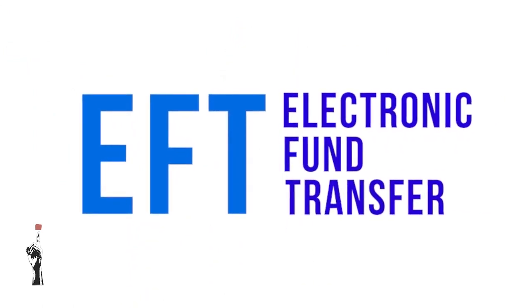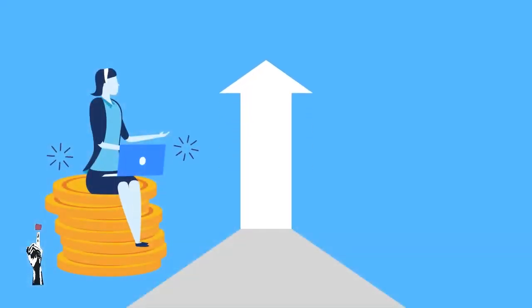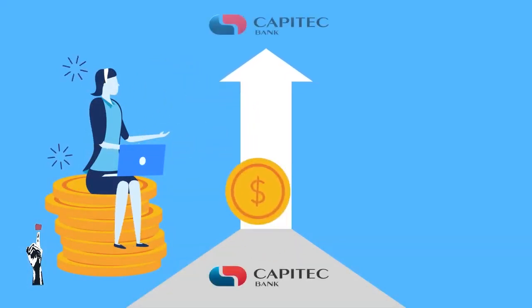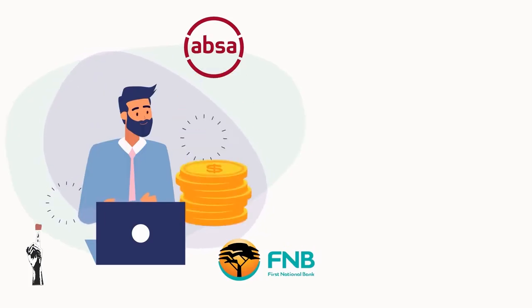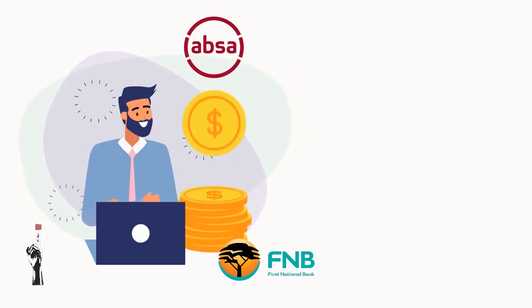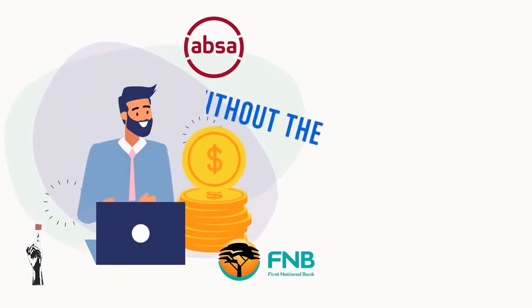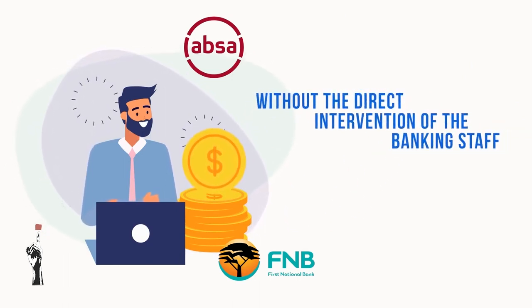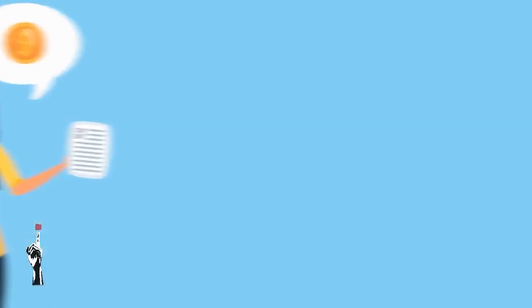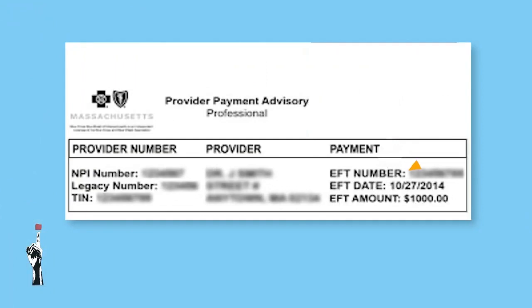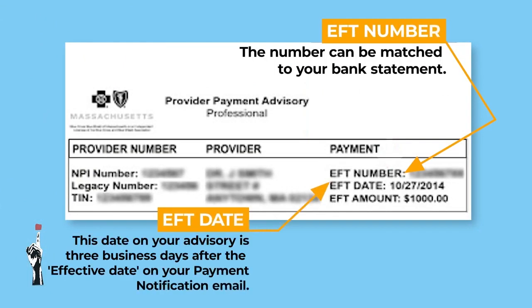Let's start with the electronic fund transfer, or EFT. This is the transfer of money from one bank account to another, either within the same financial institution or different financial institutions, via digital devices like a cell phone or tablet, without the intervention of banking staff. Each EFT has a reference number that must appear on the payment authorization form. The EFT number serves as a source document so that the specific payment can be easily traced in the future.